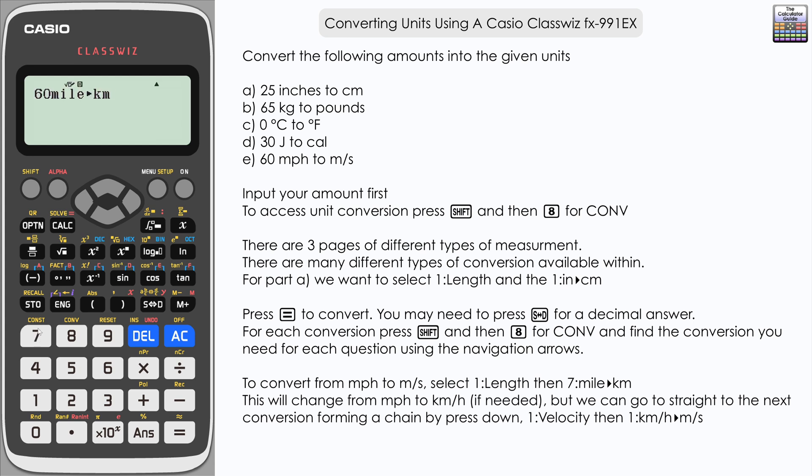Now we can actually go then straight to from this bit, shift and eight, and then down to velocity and you can see here that we can change option one, kilometers per hour to meters per second. So we don't need to redo it again, we can just do it as a chain of two conversions there and press equals. And you can see here if we press SD let's get it as a decimal, 26.8 meters per second to one decimal place.